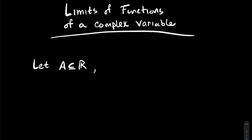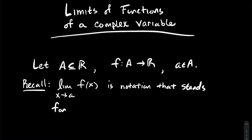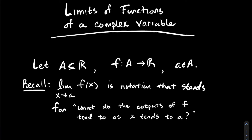Let's let A be a subset of the real line, and let f be a function whose domain is A and whose codomain is the real numbers — so it's real valued, not complex valued. And let's say that a is just some real number in the domain of our function. So recall this notation: lim as x arrow a of f of x — what does that stand for? Of course we know that's the limit as x approaches a of f of x, and it stands for the following idea: what do the outputs of f tend to as x tends to a?